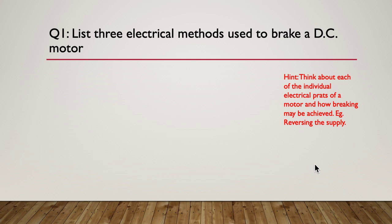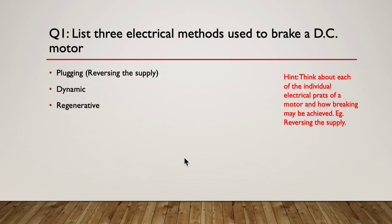Here's your hint: think about each of the individual electrical parts of a motor and how braking may be achieved — for example, reversing the supply. So we can use plugging, reversing the supply. We can use dynamic braking, which involves interposing some resistors. And it can be regenerative, where we're putting energy back into the supply.